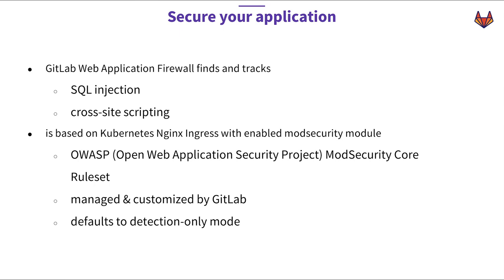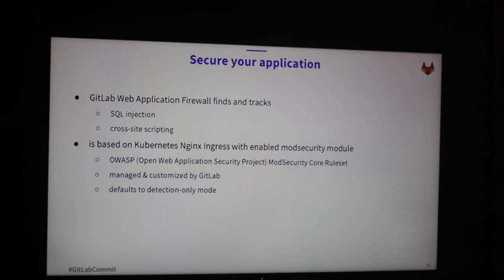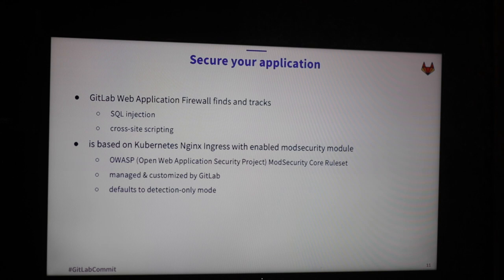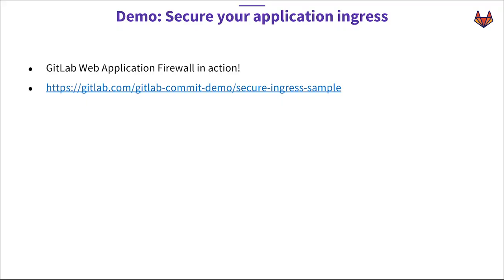By default, the GitLab application firewall only detects SQL injections or cross-site scripting attacks - you get output in a log file and can act on it. But you can also customize those rules and define a blocking mode, which means the request gets blocked and you get a 403.